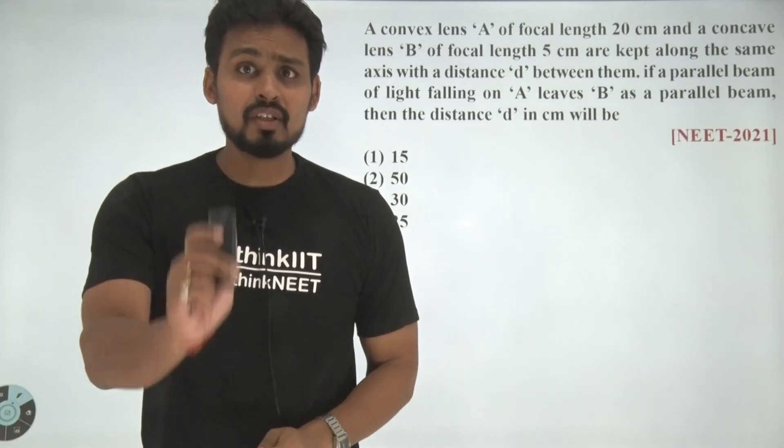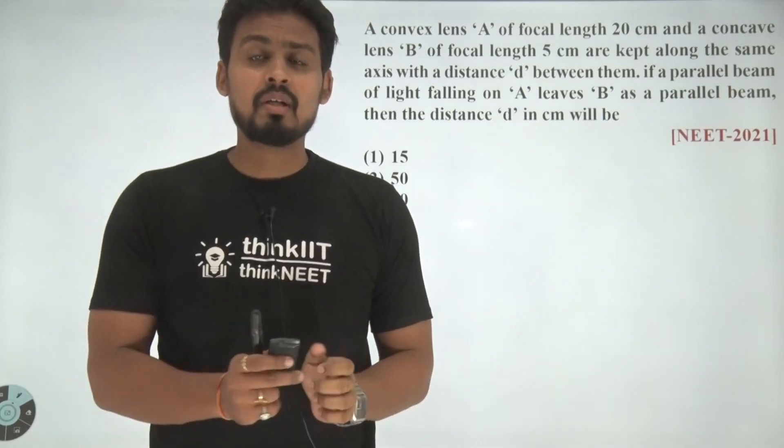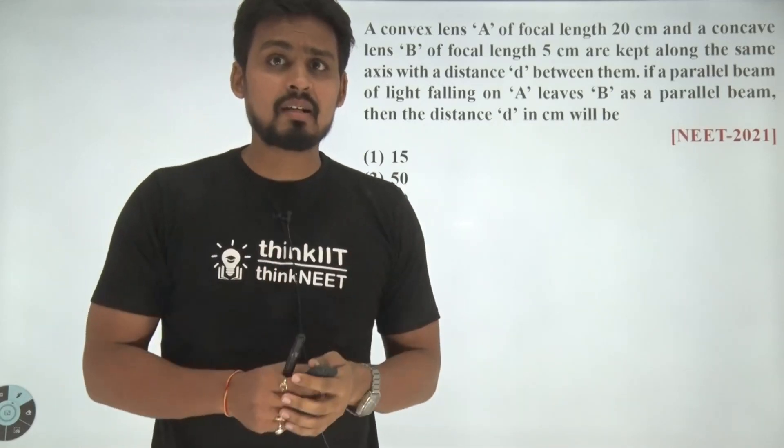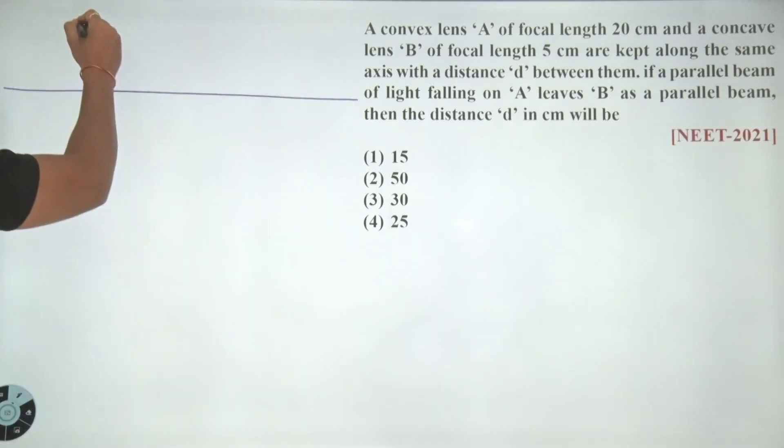In this particular question, the first thing we will draw is the convex lens and the incident rays which are coming parallel to it. So this is the principal axis that we have. This is the convex lens.